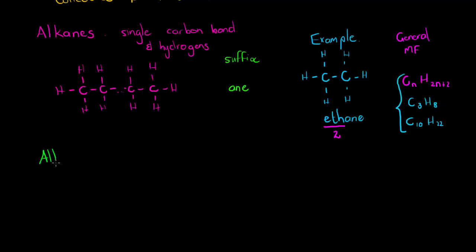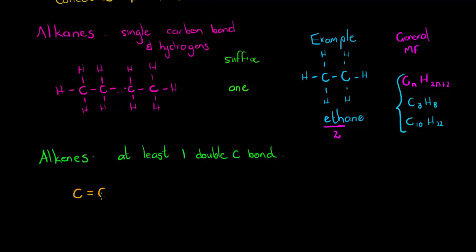The next functional group is alkenes. Alkenes have at least one double carbon bond. That means somewhere in the structure we have a carbon double bonded to another carbon, and whatever other carbon chain is attached, we represent the rest with an R — it's called a substituent group. On the double-bonded carbons there are still remaining valence electrons that get bonded to hydrogens.